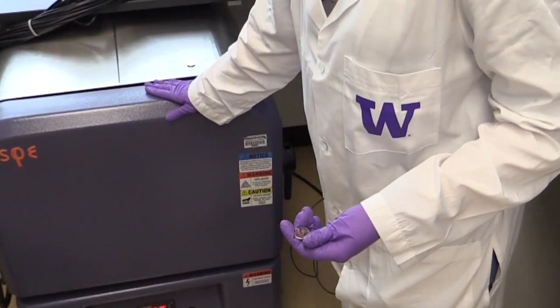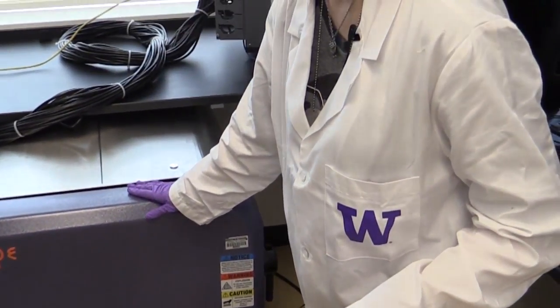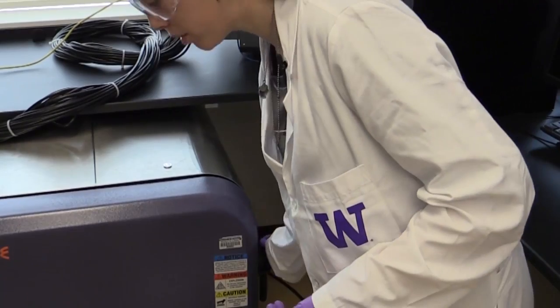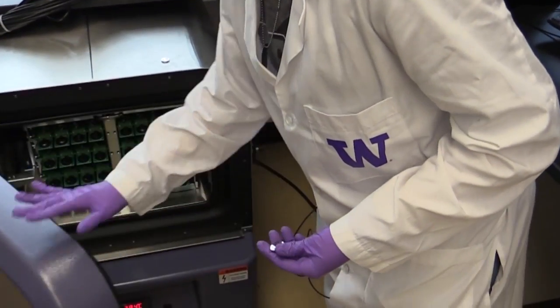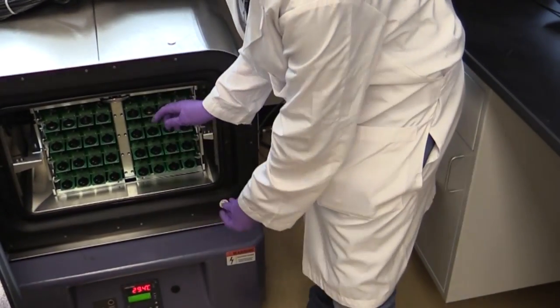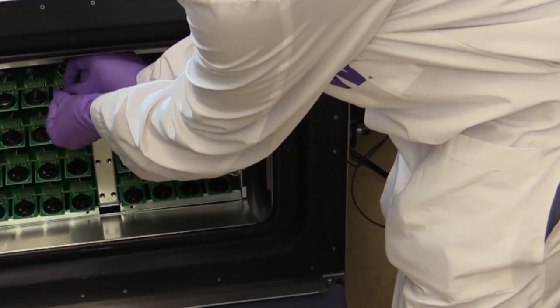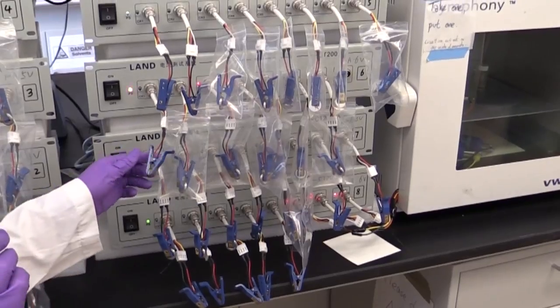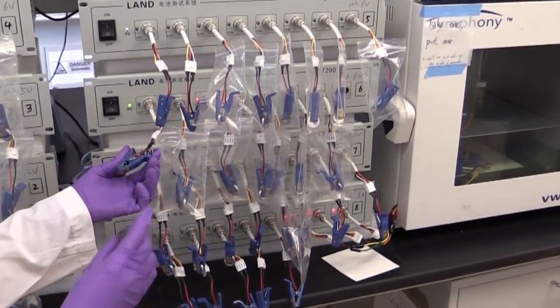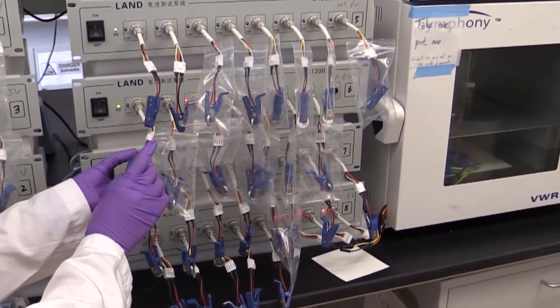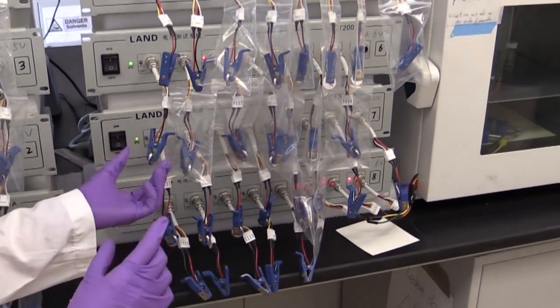This is a battery testing system from Arbin. It's temperature controlled, so you can see by the chamber. And once you open it, make sure you select a channel, put your coin cell in, large side facing up, and then you're ready to set the software to run the test. This is the Landt battery testing system. And this one does not have temperature control, so it would be just room temperature testing.